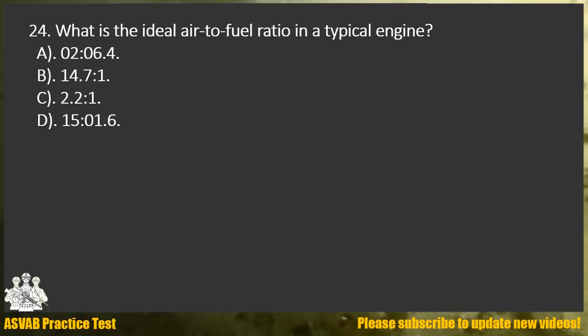Question 24. What is the ideal air-to-fuel ratio in a typical engine? A. 0.2 to 6.4. B. 14.7 to 1. C. 2.2 to 1. D. 15 to 1.6.